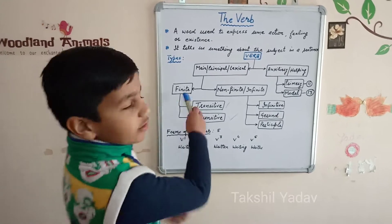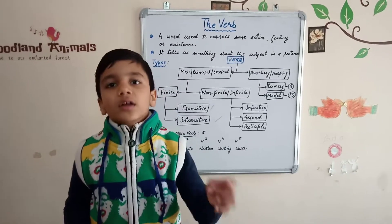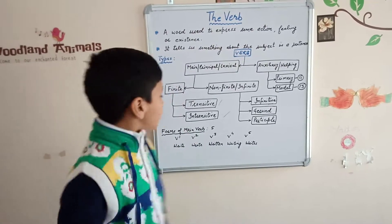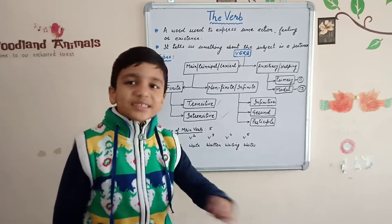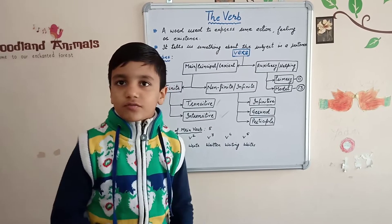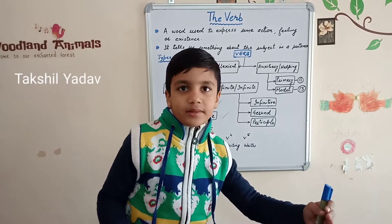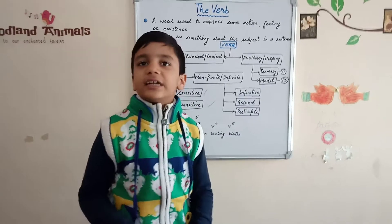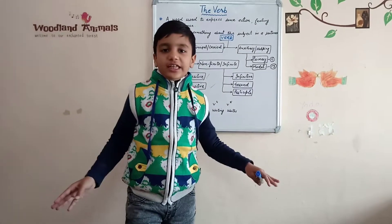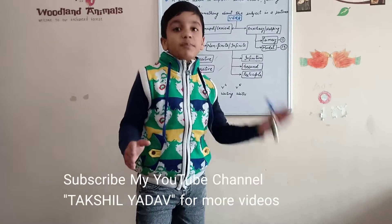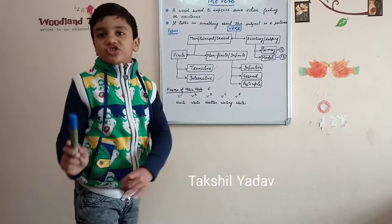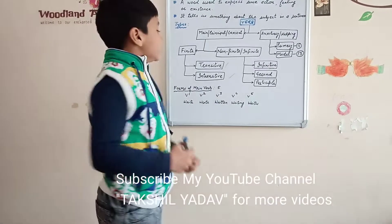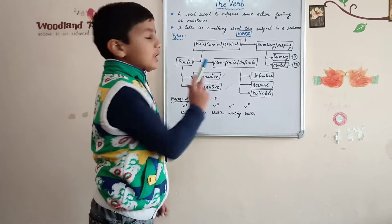An intransitive verb does not need an object to make its complete sense. For example, 'the kite flies' — if we ask 'the kite flies what?', we do not get any answer, yet the sentence still makes complete sense. Such verbs are known as intransitive verbs. Note that there are some verbs that can be used as both transitive and intransitive verbs.